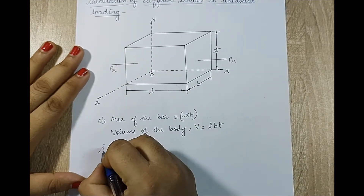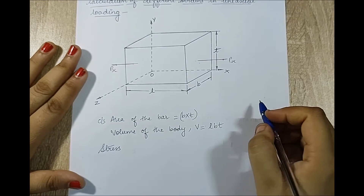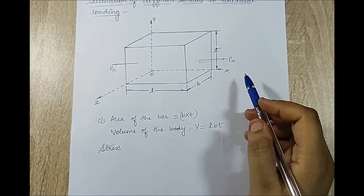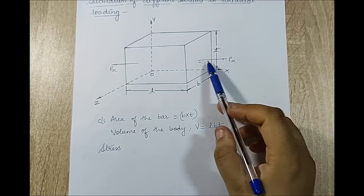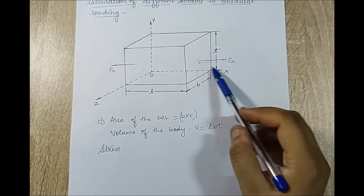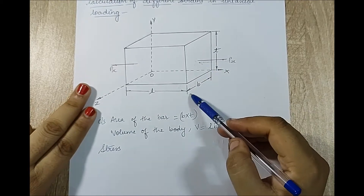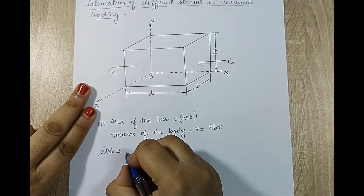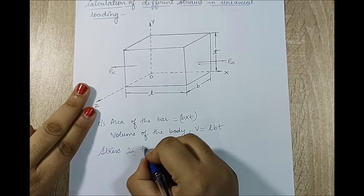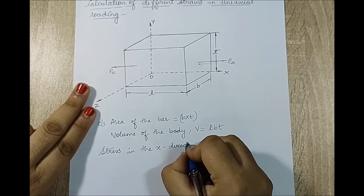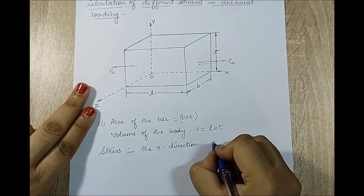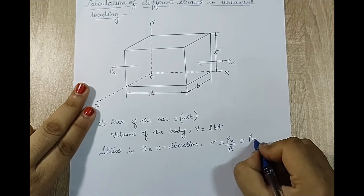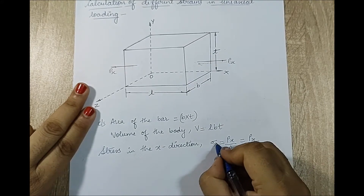The volume of the body V will be L·B·T. Now I will calculate the stress. First I will calculate the stress along the axis in which the load is applied — this is the axis along which we calculate the longitudinal strain. Along the length we will have the linear strain, and B and T will be the lateral sides where lateral strain is exerted. The stress in the x direction, sigma x, will be Px upon A, which is Px upon B·T.